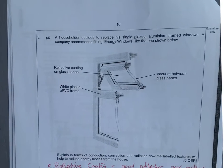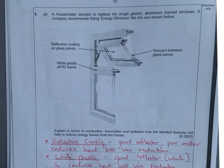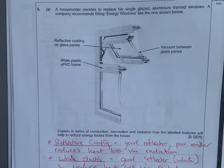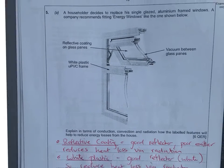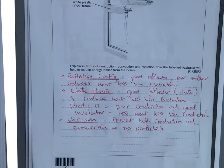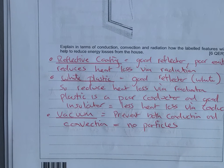The six mark question then is asking you what you really know about heat transfer. There's three forms of heat transfer: convection, conduction, and radiation. If you read the question, they're asking you how this window prevents the heat loss.